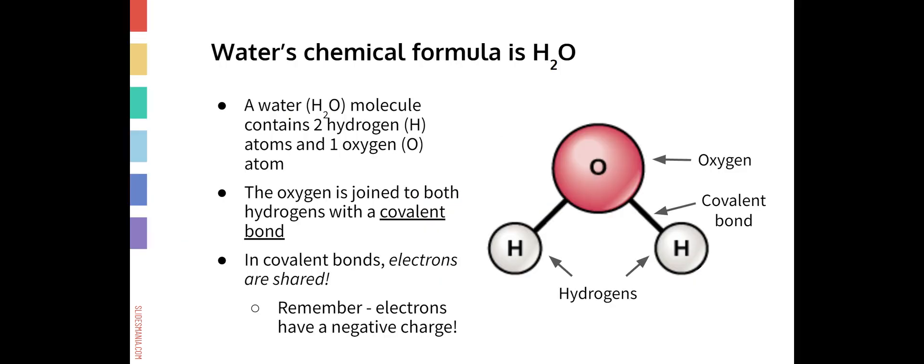Before we start, hopefully we all know that water's chemical formula is H2O. And that means that one molecule of water is going to have one oxygen atom bonded to two hydrogen atoms. So two hydrogens, one oxygen. And these atoms are held together with covalent bonds. So these black lines here represent covalent bonds. And in covalent bonds, electrons are shared between the atoms. So oxygen is sharing electrons with this hydrogen and this hydrogen. And these electrons that are being shared have a negative charge.